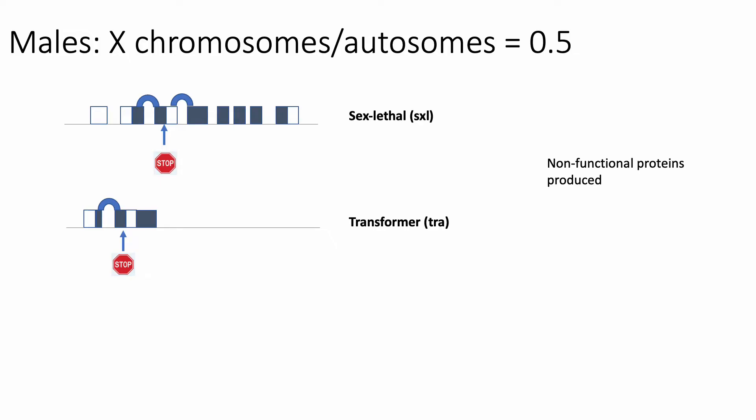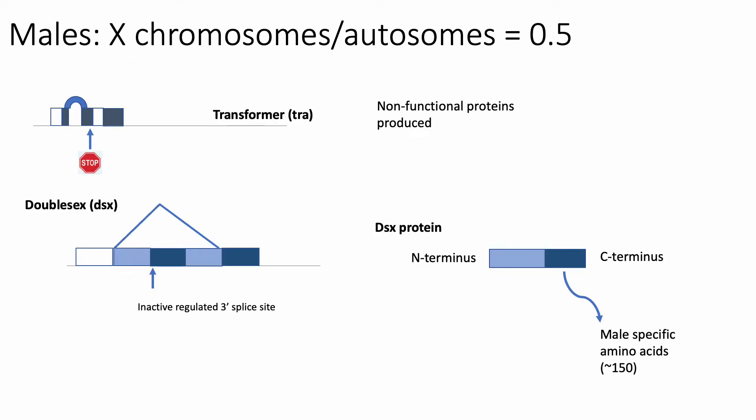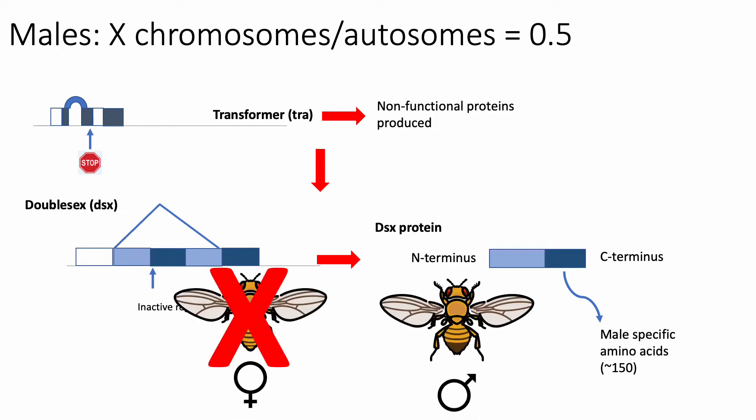In the male developmental pathway, which is the default pathway, the cascade is triggered by a ratio of 0.5. Both sex-lethal and transformer are transcribed, but the RNAs of both are spliced constitutively to keep an exon that has a premature stop codon. This renders the resulting truncated proteins non-functional. When there are no functional sex-lethal and transformer products made, the double-sex transcript is spliced to produce a male version of the double-sex protein that deactivates female characteristic genes in favor of the male.